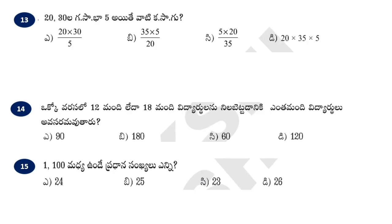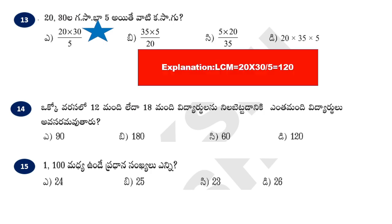Okay friends, next. 20, 30 is 5. So the 5 is equal to 2. The right answer is 20 into 30 by 5. The next one. This is a constant need. The problem has only one answer — it is very important here.